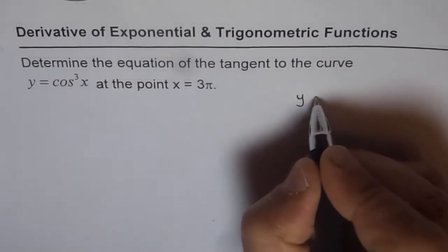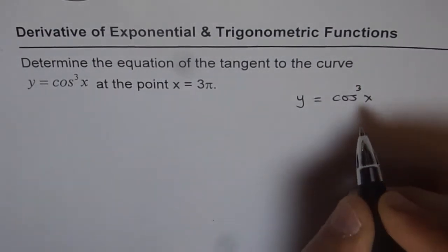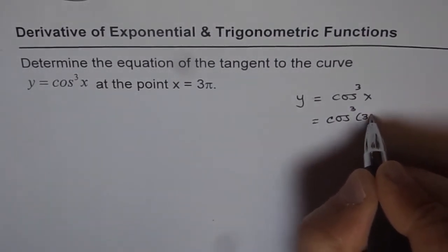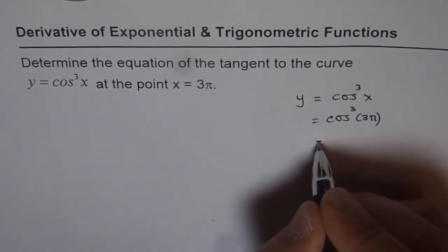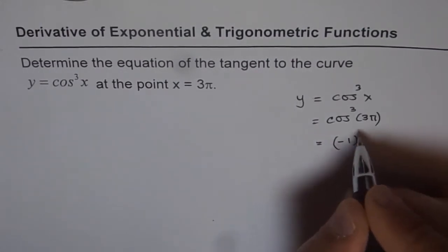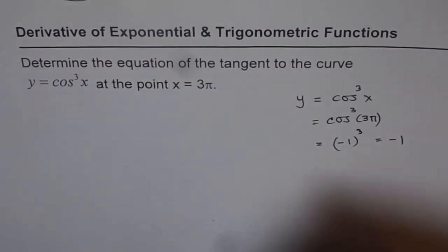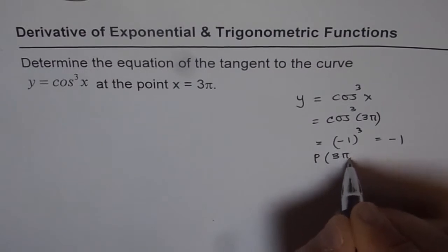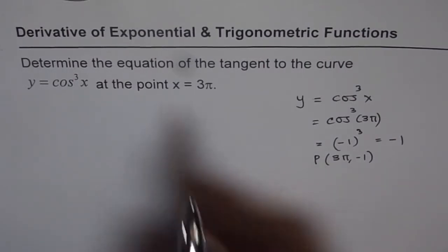The function given is y = cos³x. At x = 3π, it would be cos³(3π). Since cos(3π) = -1, we have cos³(3π) = (-1)³ = -1. Therefore, the point given to us is (3π, -1). This point will help us find the equation of the tangent line to the curve at x = 3π.